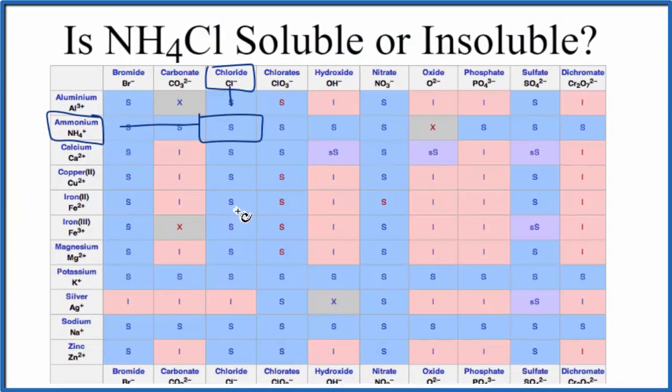There's one more way we could figure out whether NH4Cl is soluble or insoluble in water. We could just take some crystals and put them in water and see what happened. We would expect, based on the solubility rules, and then based on our chart here, that they would dissolve.